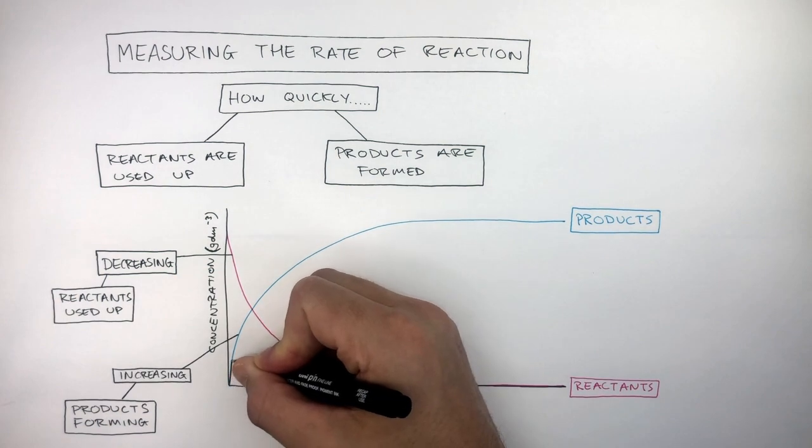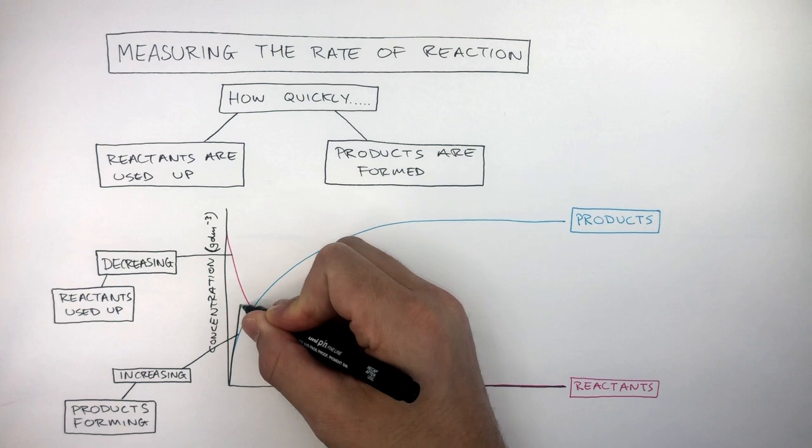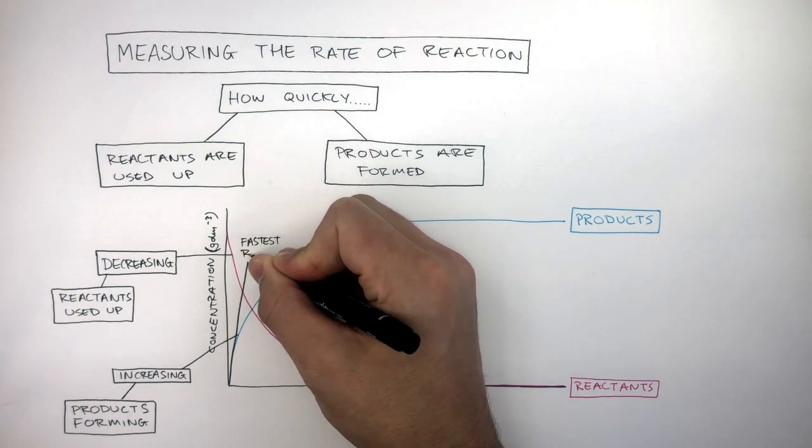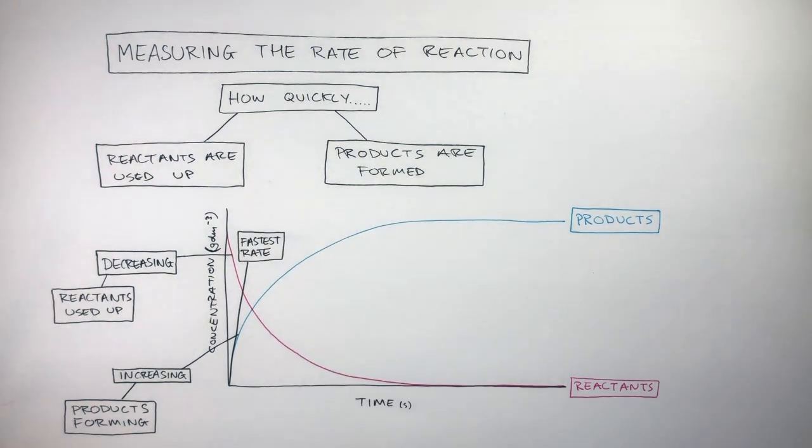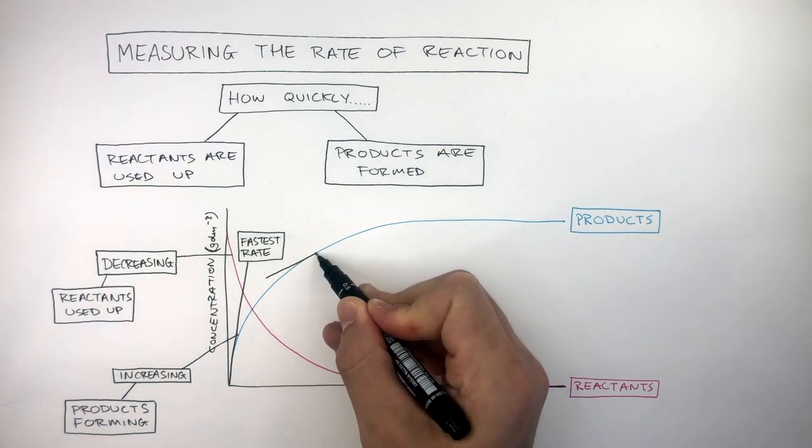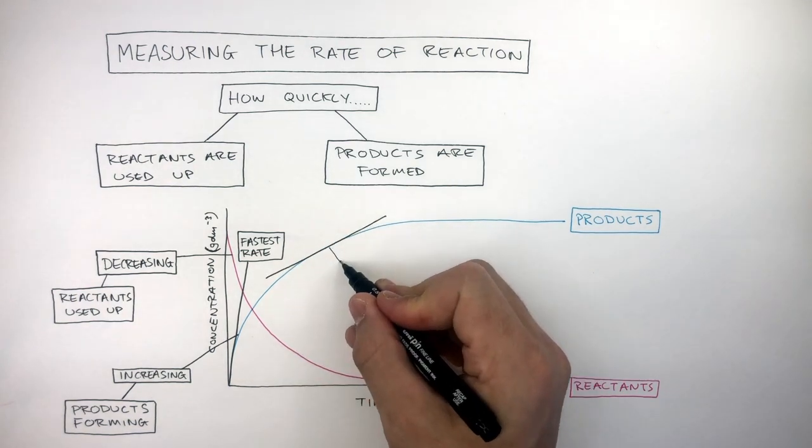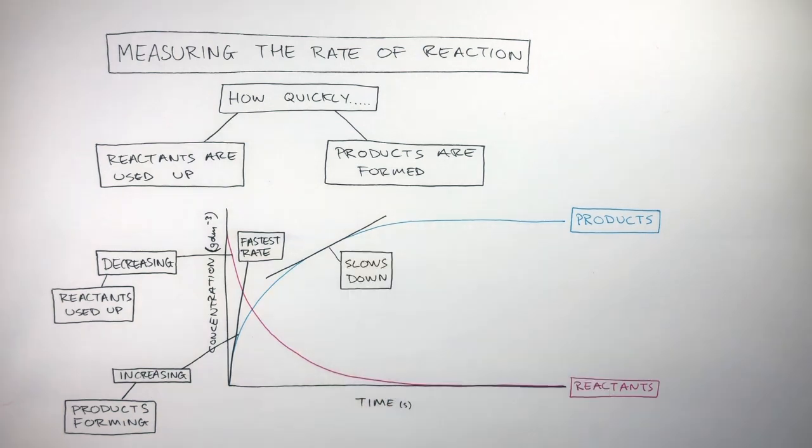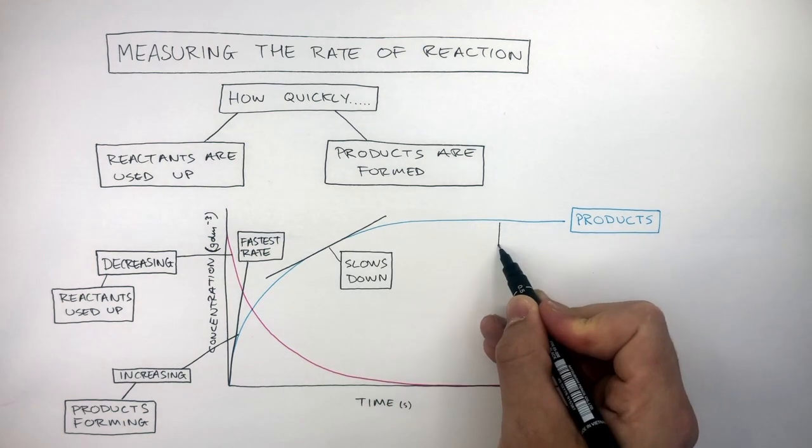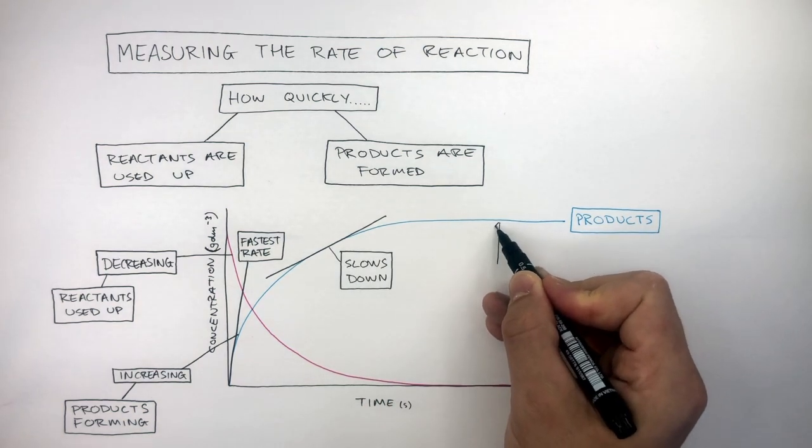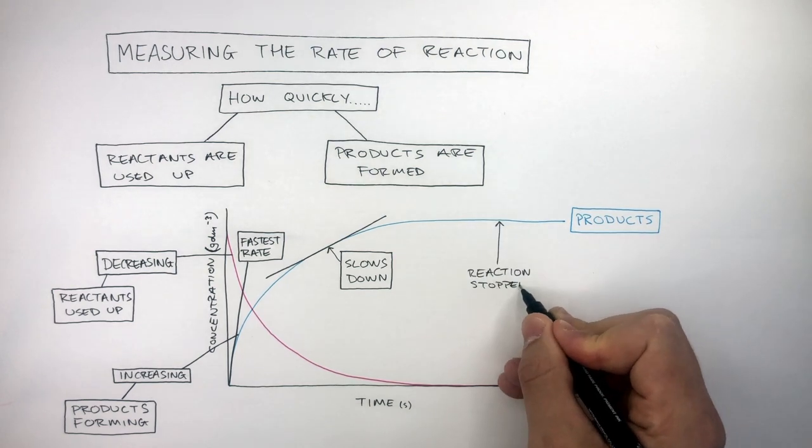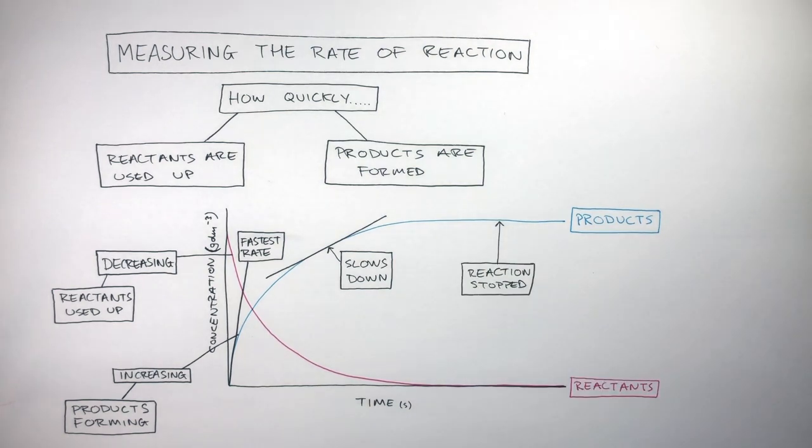This tangent shows the steepest part of the curve is the fastest rate of reaction. This is the easiest and quickest way to measure the rate of reaction on any curve on a rate of reaction graph. Where the curve is less steep, this means the rate of reaction slows down. Where the curve is flat or horizontal, this means the reaction has stopped, as no more product is forming.